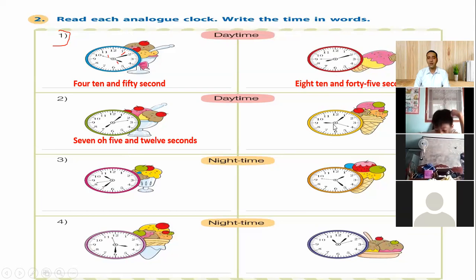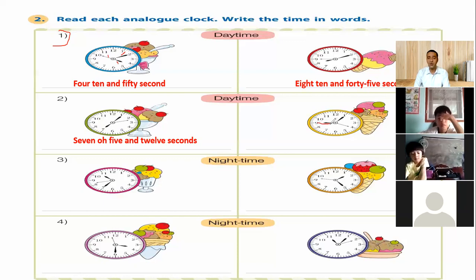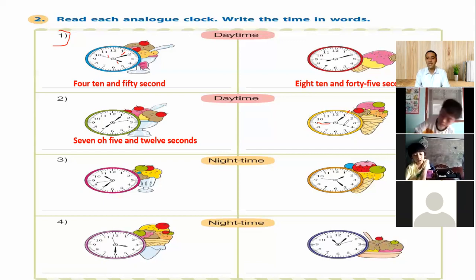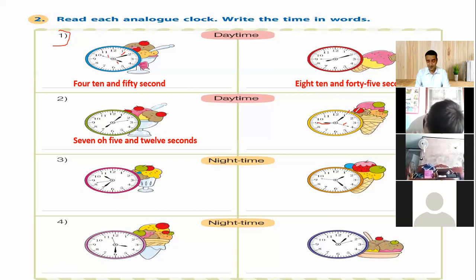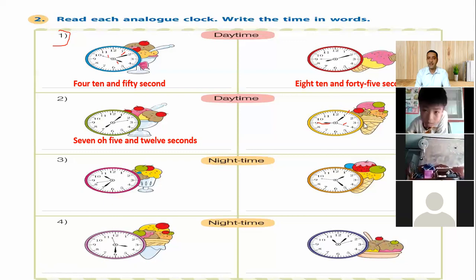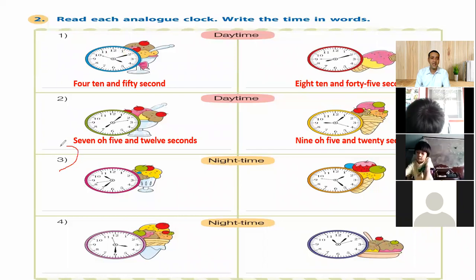Another clock — the short hand is towards nine, so the hour is nine. The long hand is towards one, so that means five minutes. We read it as nine oh five. The seconds hand is at four, and from 12 until four we have about 20 dots, so approximately 20 seconds. That means nine oh five and 20 seconds.